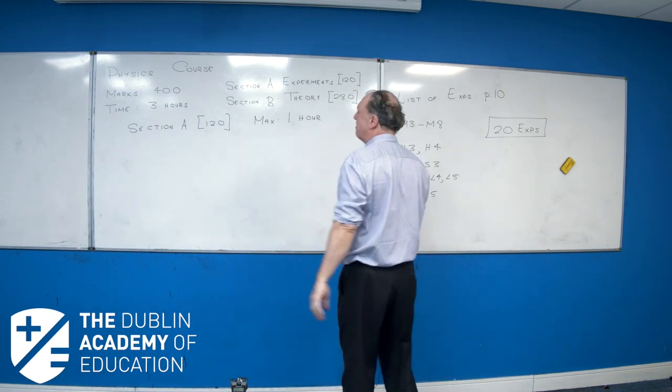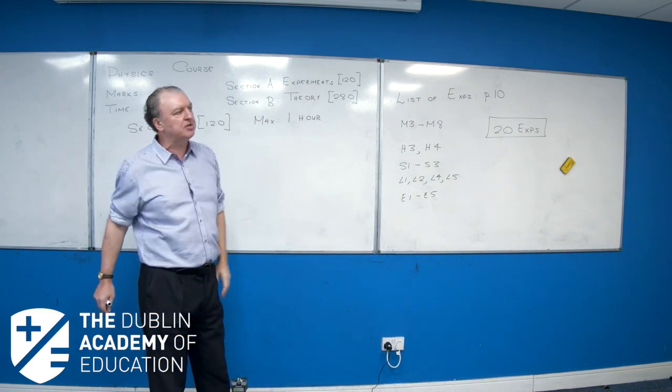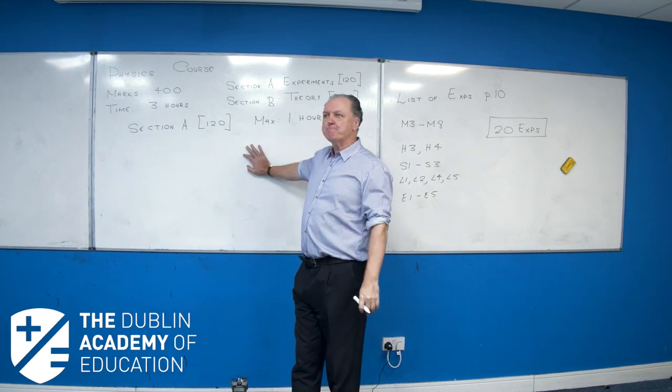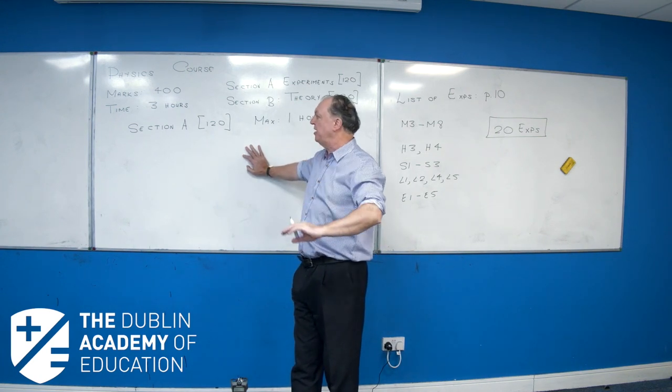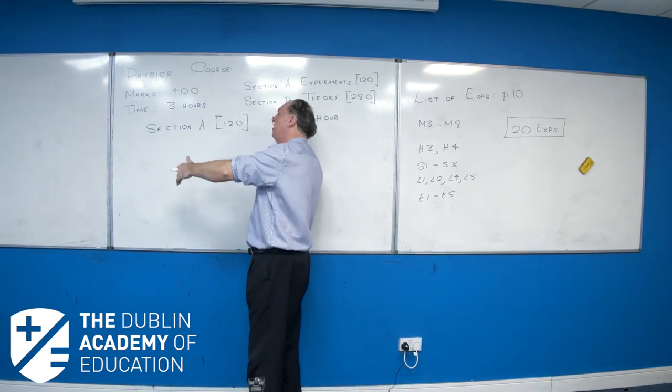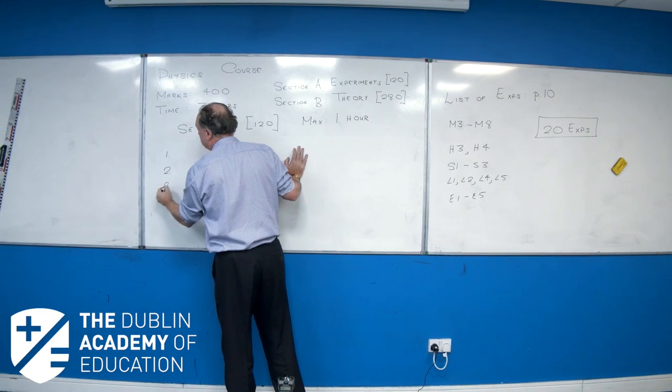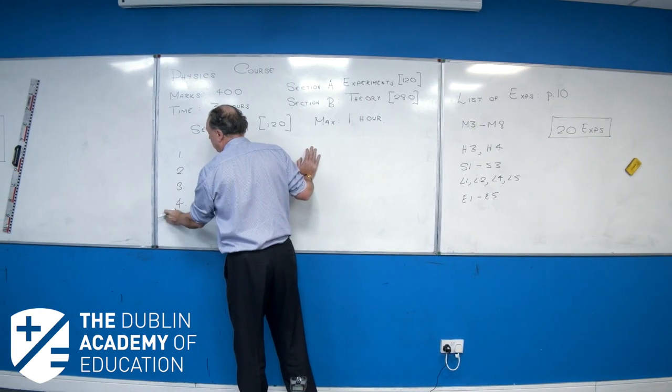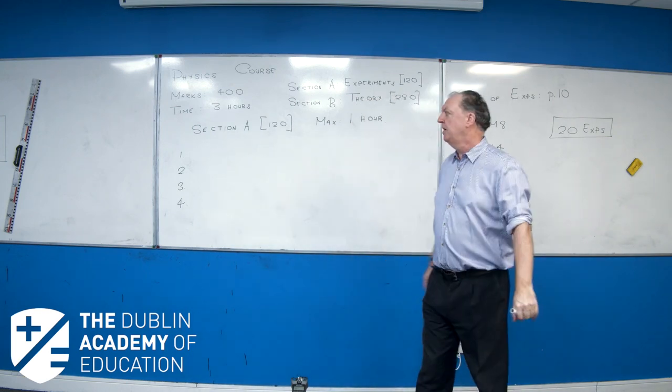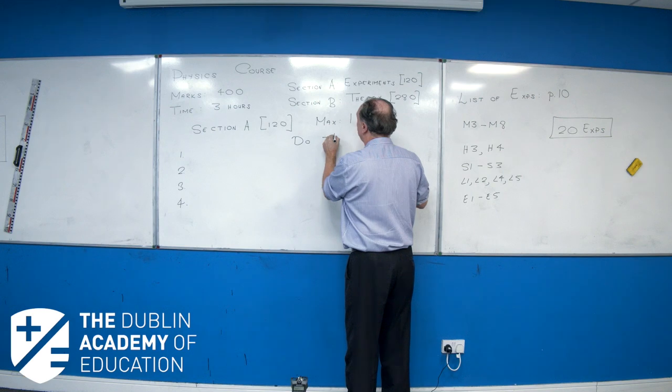Right, let's get back to our paper now. So, we have 20 mandatory experiments to learn. I open up my exam paper, I don't go near Section B. I go to Section A, and I have four questions. The first four questions are about the mandatory experiments. You have to do three out of four experiments.